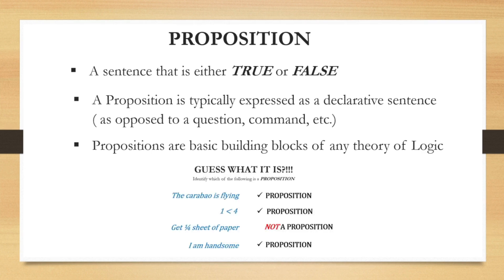Let us review the sentences that we had a while ago. The first sentence is the carabao is flying, which is a proposition because it is a false statement. The second sentence is one is less than four, which is a proposition, which is a true statement. And the third sentence we have, get one fourth sheet of paper, which is not a proposition because it is not a declarative sentence, it is a command. And the last sentence is I am handsome, which is a proposition because it is a declarative sentence.